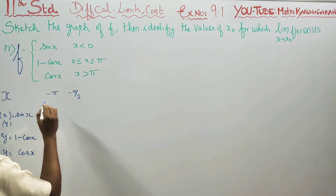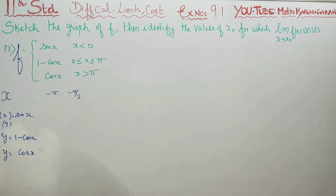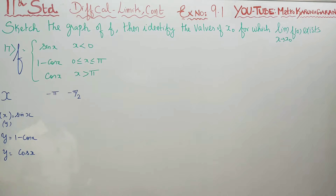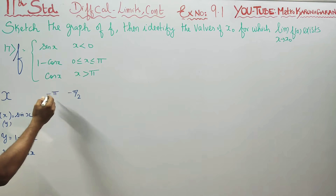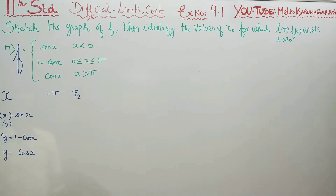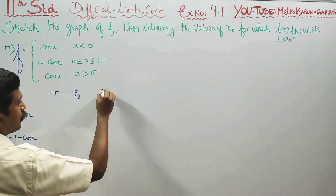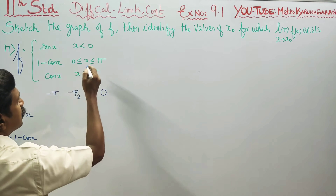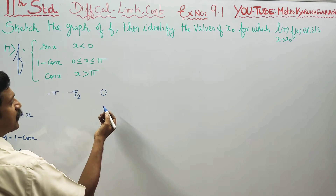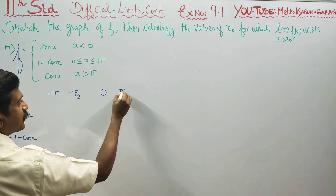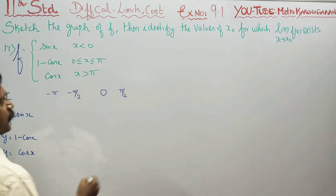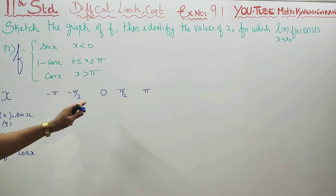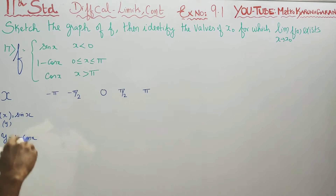Minus pi by 2, zero, minus 90, minus 180 — sin x values at minus pi, minus pi by 2, zero. Then from 0 to pi: at 0 the value is 0, at 90 it is 1, at 180 it is 0, at pi the value is 1.